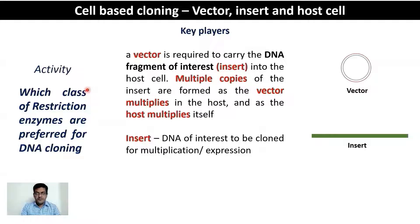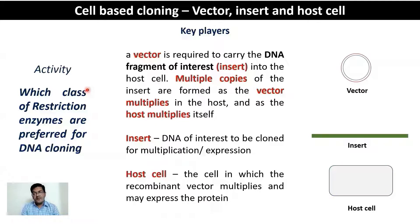The third most important player is the host cell — the cell in which the recombinant vector will be resident and will amplify, and also express, the DNA of interest if required. The host cell must be compatible with both the vector and the insert. Strategies to ensure the recombinant vector in the host cell is identified include modification of the host cell DNA itself.